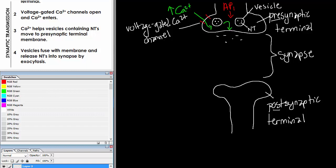Now we have neurotransmitters in the synapse and they start to diffuse across. On the other side, at the post-synaptic terminal, there are receptors for those neurotransmitters — I'm going to draw these as tiny goalpost-like structures. Each of those is a post-synaptic receptor, and the neurotransmitters will diffuse across and bind to the receptor.